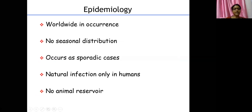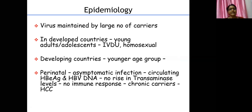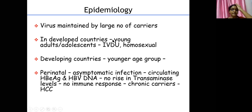Hepatitis B occurs throughout the world. Natural infection occurs only in humans — no animals act as reservoirs. There is no seasonal distribution; the same occurrence happens throughout the year, usually as sporadic cases. Many carriers are present. In developed countries, young adults, adolescents, IV drug users, and homosexuals are most at risk. In developing countries, very young children get the infection, particularly in the perinatal age group — just around birth — with asymptomatic infection.